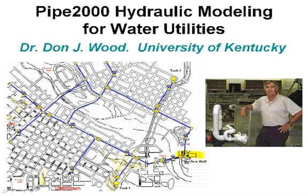Here's a clear well and a pumping station. Up in here is a storage tank, fire hydrants, and valves in the system. These are typical components of a water utility model.